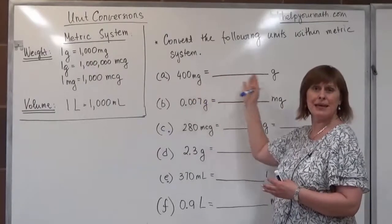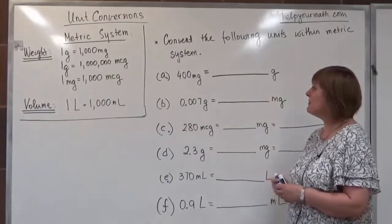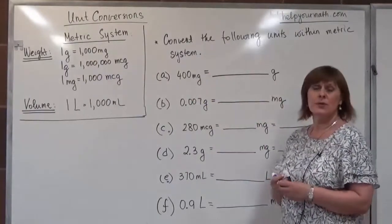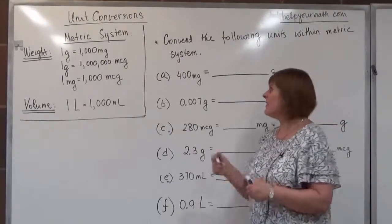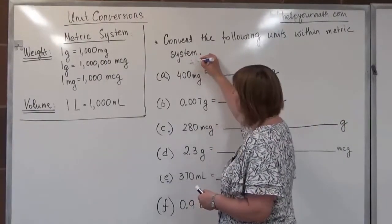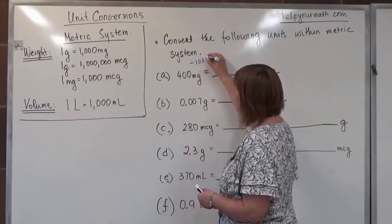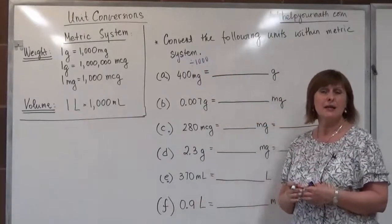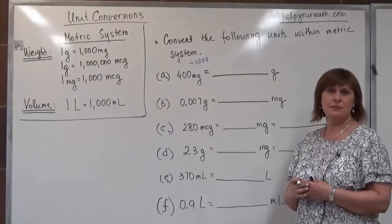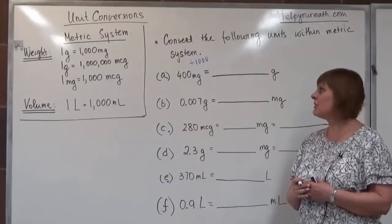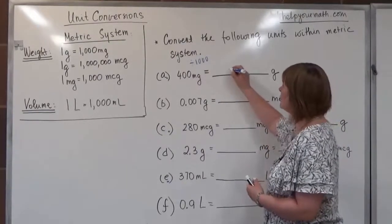When converting from milligram to gram, we need to divide by 1,000. We keep in mind that we are dividing by one thousand, and for that we also need to shift the decimal point three places to the left.